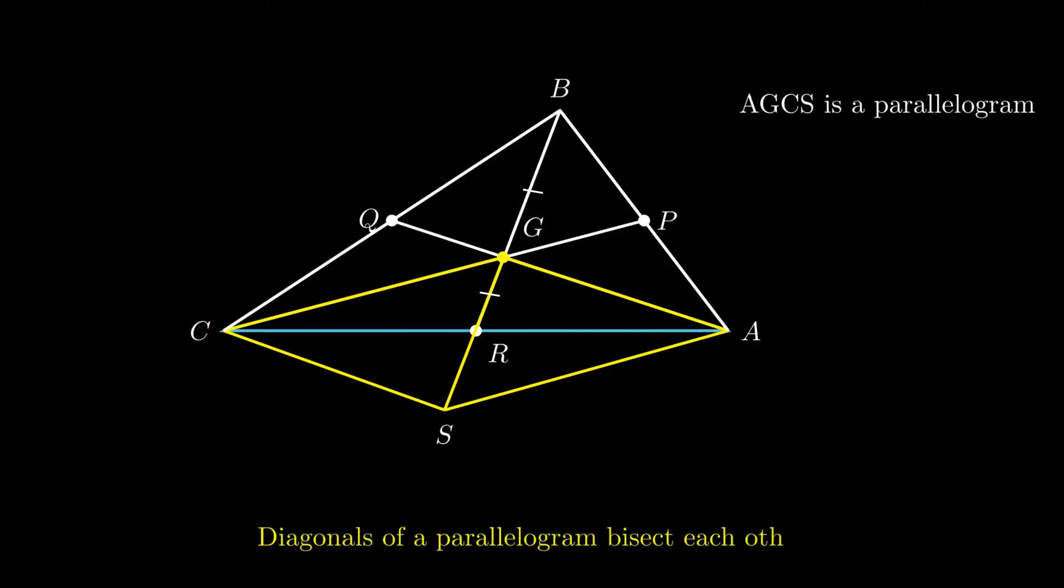Since diagonals of a parallelogram bisect each other, therefore segment GR is equal to segment RS. From figure, segment GS is equal to the sum of segment GR and RS. So segment GS is twice of segment GR.